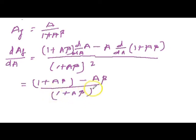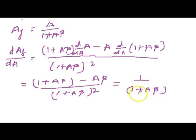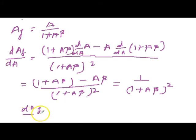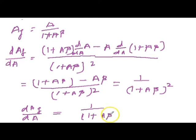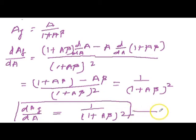Solving the numerator: (1 + A·β) minus A·β cancels out, leaving only 1 over (1 + A·β)². So dAF/dA equals 1 over (1 + A·β)². This is equation number 1, and it tells us how AF changes with respect to A.